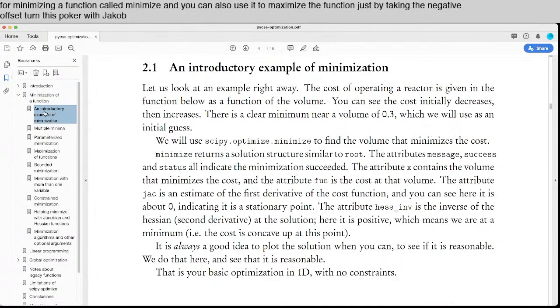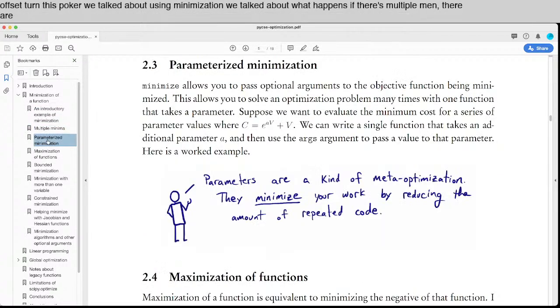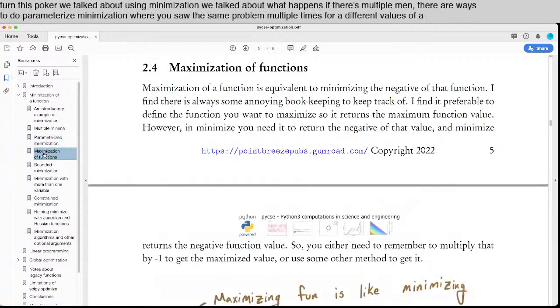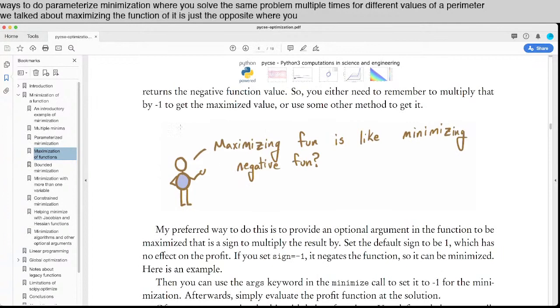In this booklet we talk about using minimization, what happens if there's multiple minima, and parameterized minimization where you solve the same problem multiple times for different values of a parameter. We also talk about maximizing a function, which is just the opposite where you take the negative of it and minimize that.